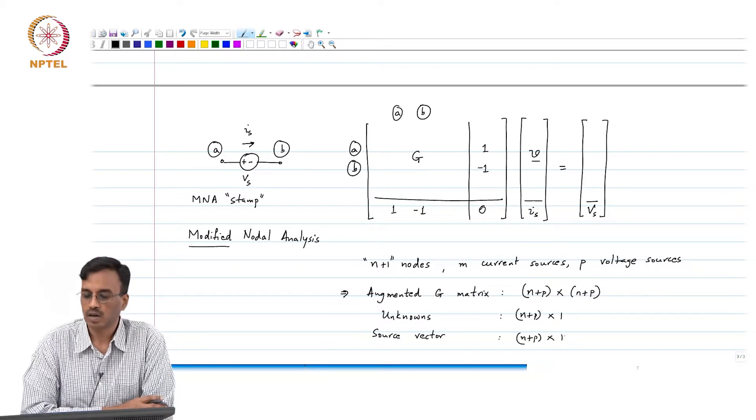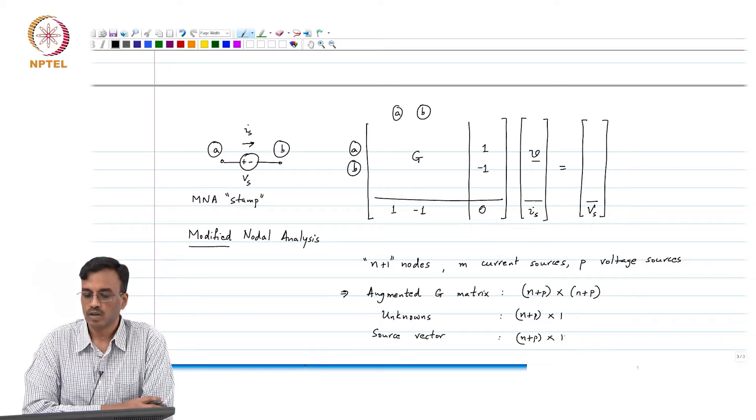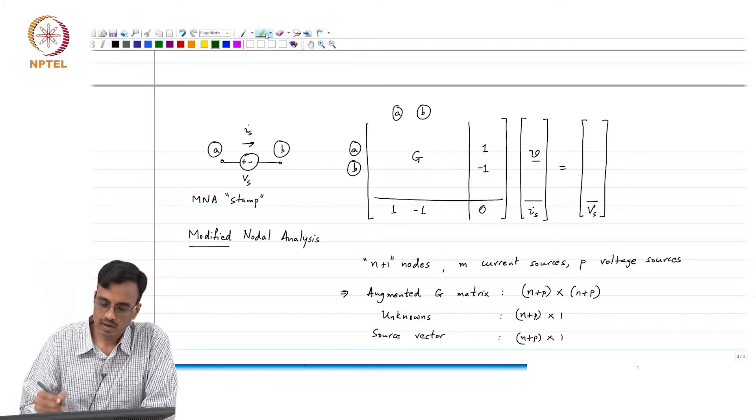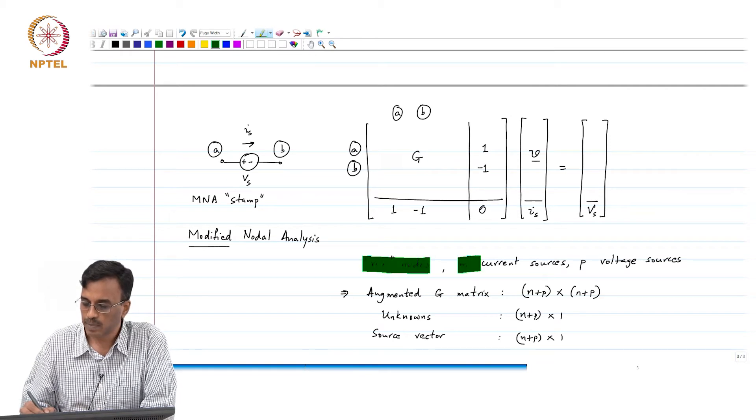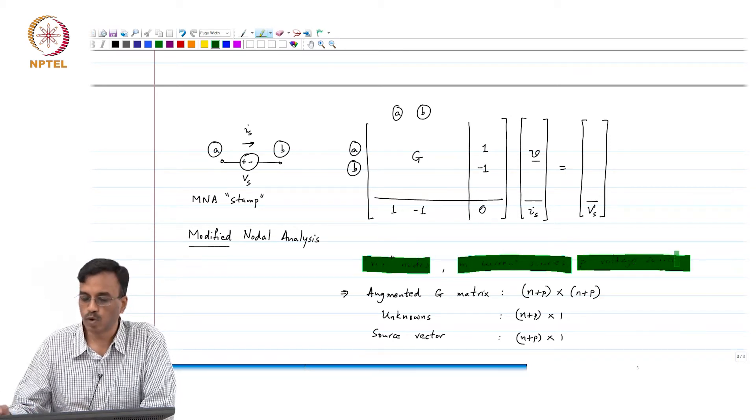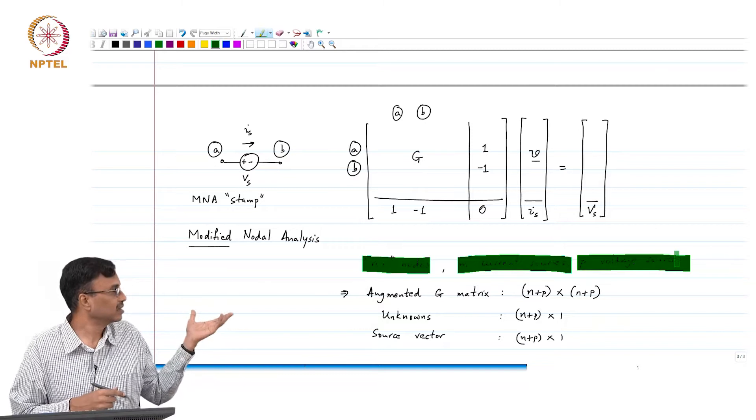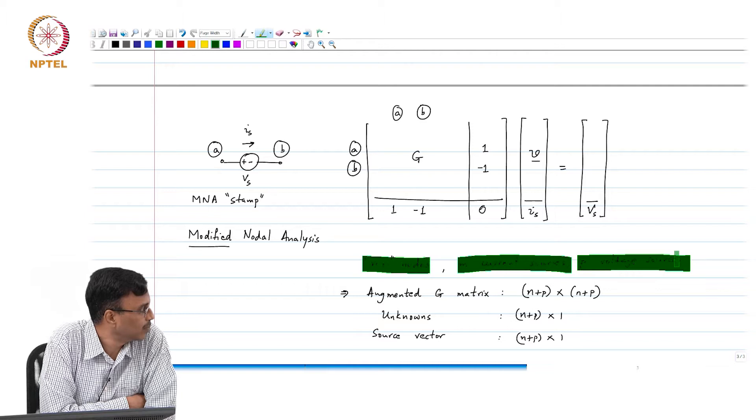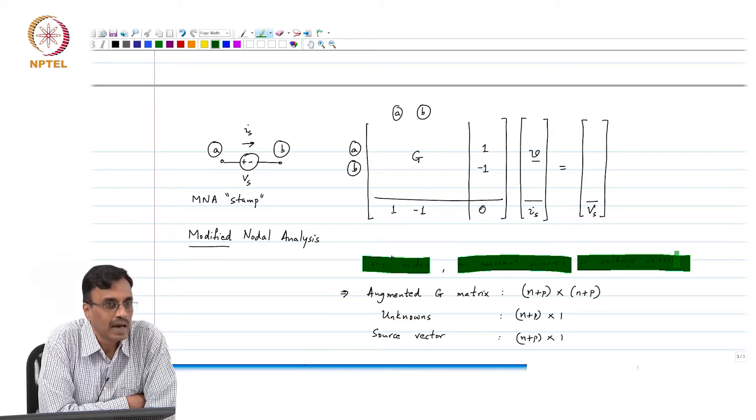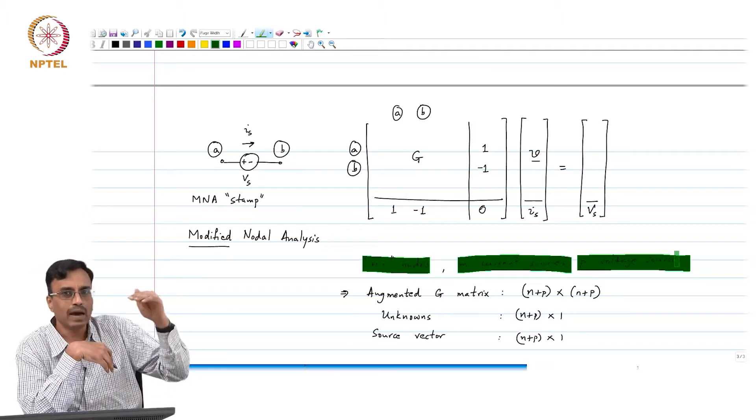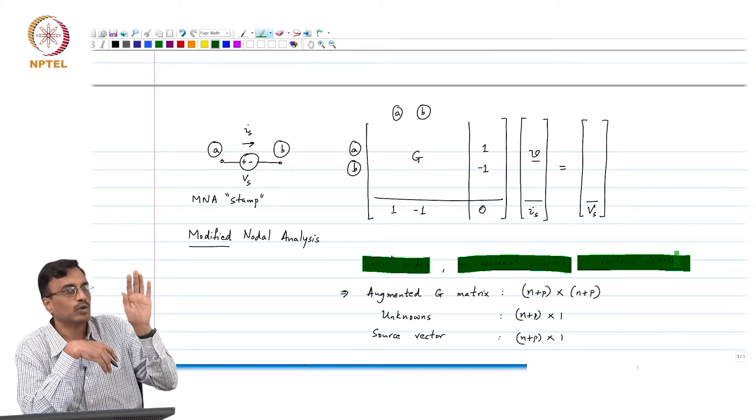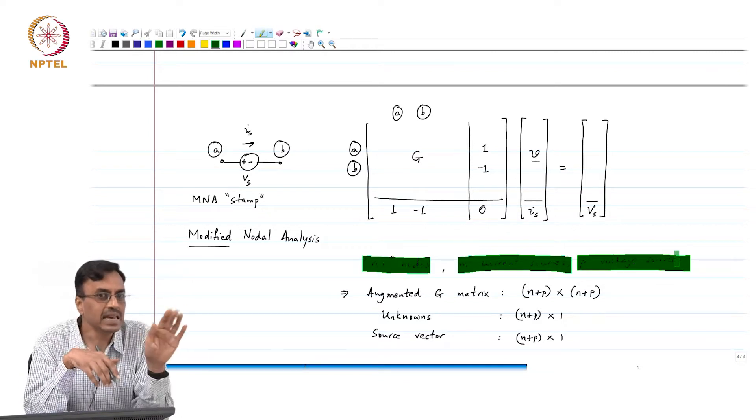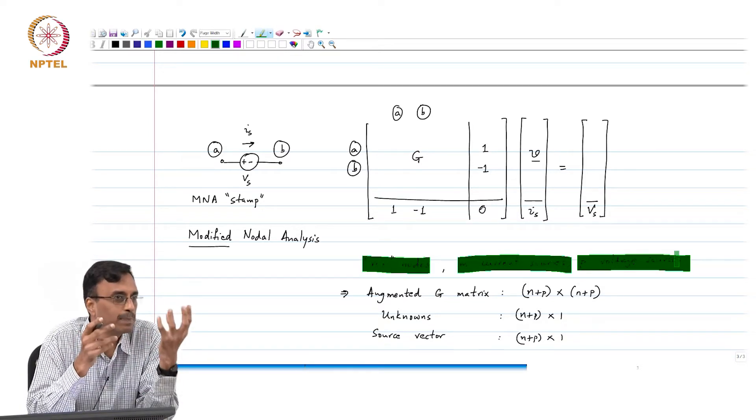Once you know the number of nodes in the network, the number of independent current sources and the number of independent voltage sources, the job is very straightforward. You first set up a matrix of size n plus p cross n plus p and then you go element by element and to the initialized matrix full of zeros, you just add the stamp of that particular element.